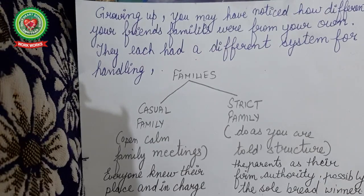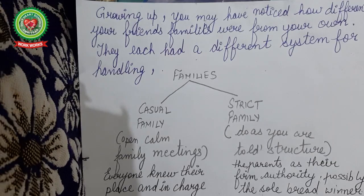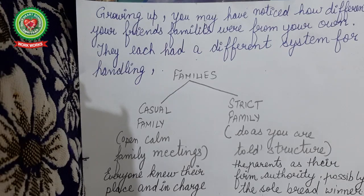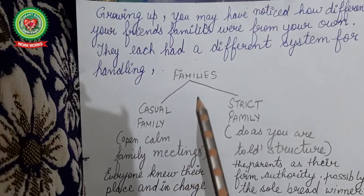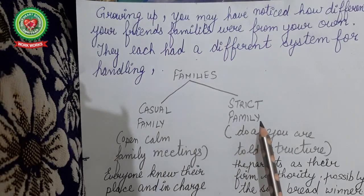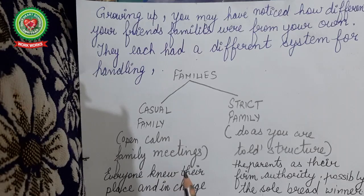As we grow up in society and in our families, we notice how different our friends' families are from our own. Each family has a different system for handling things. Families are generally of two types: one is a casual family and another is a strict family. A casual family is open and calm — they have family meetings, everyone knows their place, and everyone is in charge of their own activity.